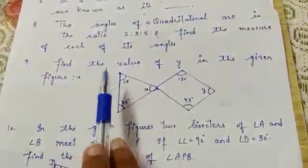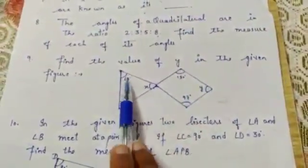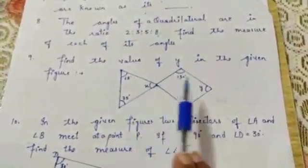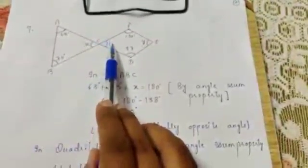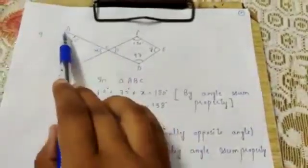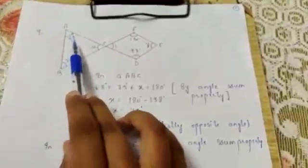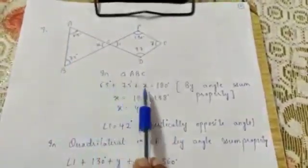Sum number 9. Find the value of y in the given figure. Four angles are given here and by using these angles we have to find the value of the unknown angles. We named one angle as angle 1. Triangle ABC has 3 angles: 63 degrees, 75 degrees, and x degrees. We know that the sum of all angles of a triangle is 180 degrees, so 63 + 75 + x = 180 degrees by the angle sum property.